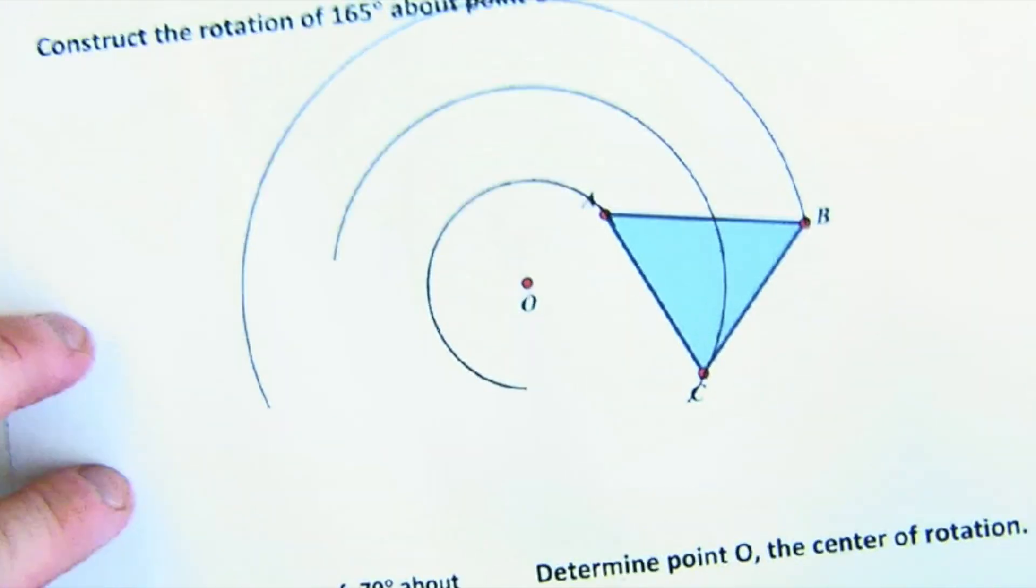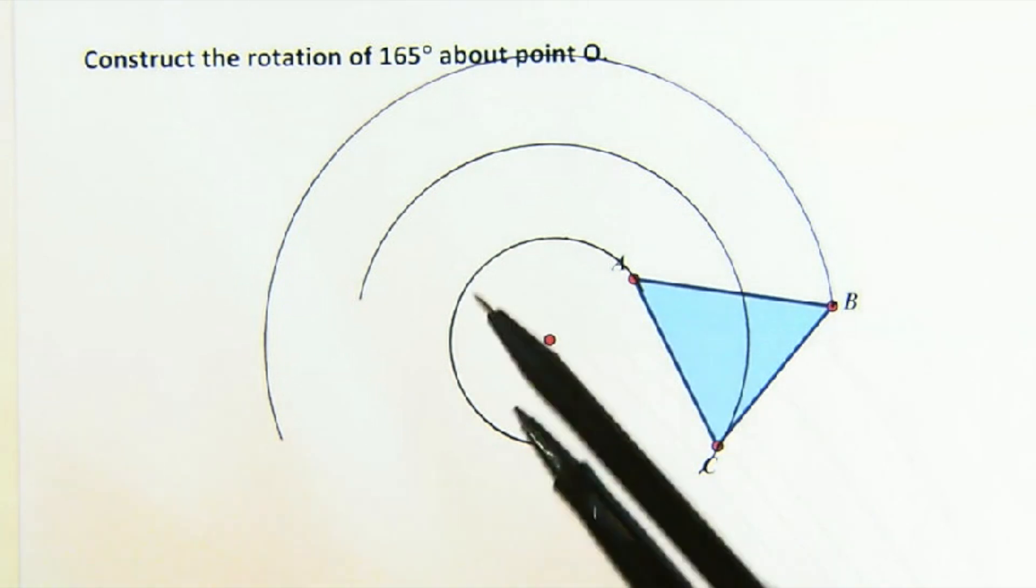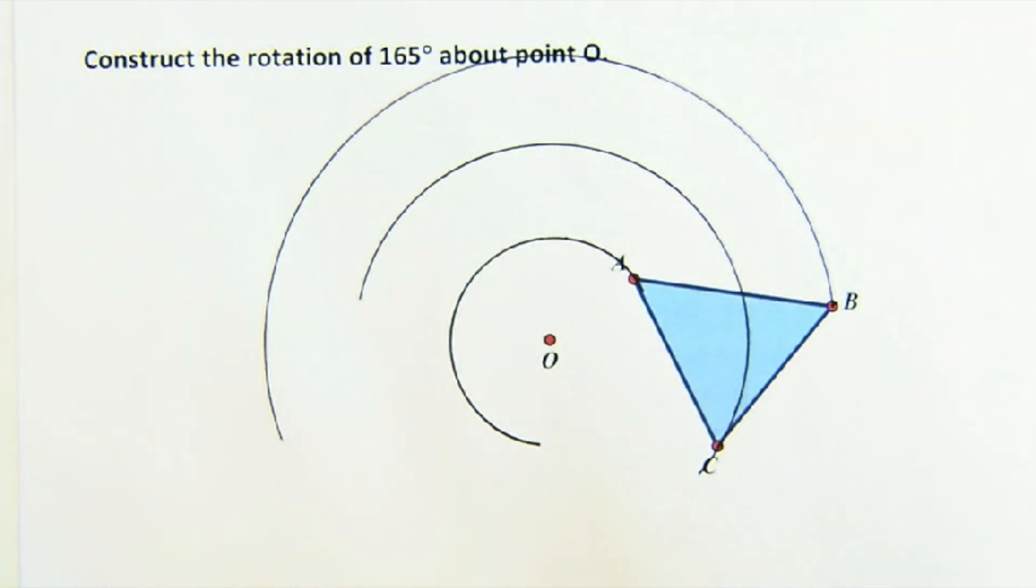So what this represents is the paths that each of these are going to take, because we know by the characteristics that OA and OA prime will be equal and OB and OB prime will be equal. That's because they're on the arc and the radii of this circle stay the same.